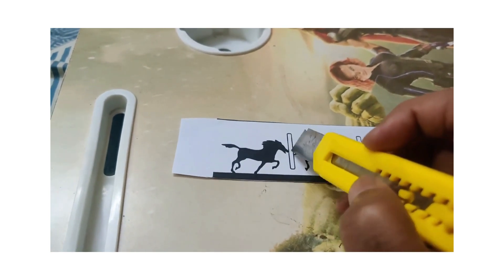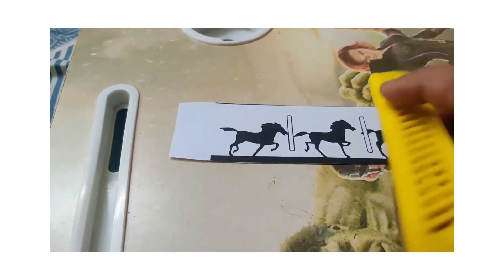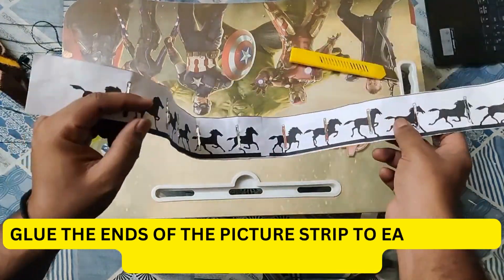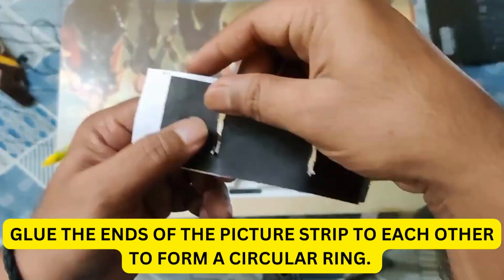After doing this, carefully remove all the slits present in the template. Now friends, glue the ends of the picture strip to each other to form a circular ring.